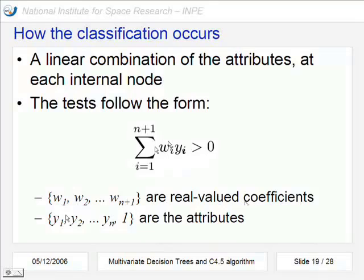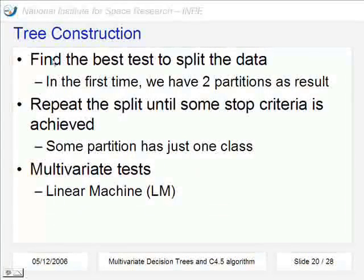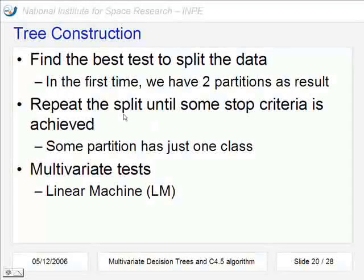And the attributes are the attributes that we have. And we use also a simple attribute one here, just like the bias at the neural nets approach. When we construct the tree, we have to find at the beginning the best test to split the data.